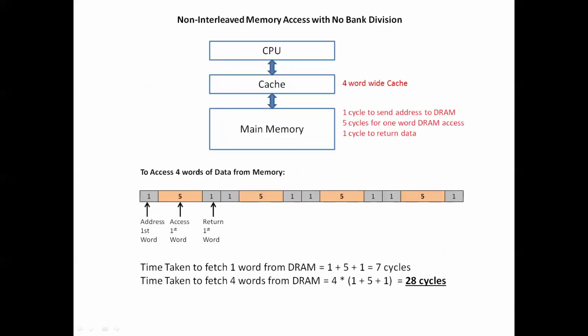Let's understand this by considering cycle times. Assume that it takes one cycle to send the address to DRAM, five cycles to access one word from DRAM, and one cycle to return the data. So to fetch one word from DRAM, it would require seven clock cycles. In a non-interleaved memory access, if we are fetching four words from DRAM, it would take 28 clock cycles, as shown here.